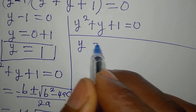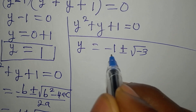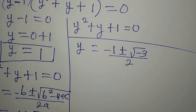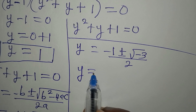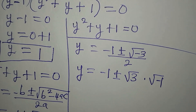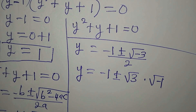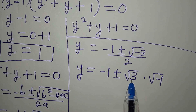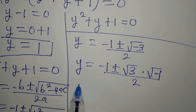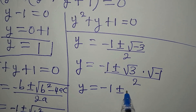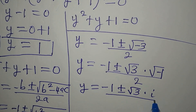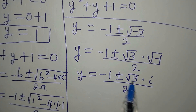We have y = (-1 ± √(-3)) / 2. Because we have the square root of a negative number, we won't have a real solution, but we can continue. We separate √(-3) into √3 · √(-1). Since √(-1) is imaginary, we write i for it. So y = (-1 ± √3 · i) / 2, which we can write as (-1 ± i√3) / 2.